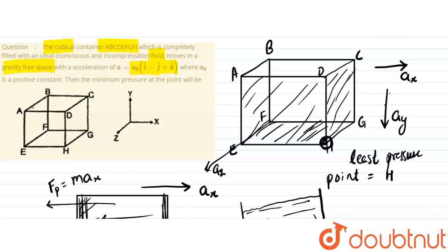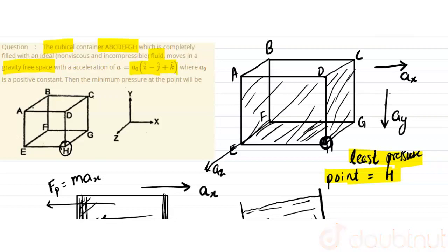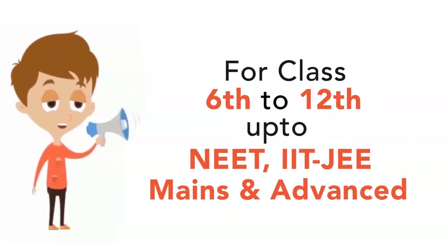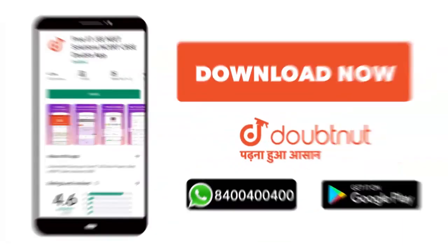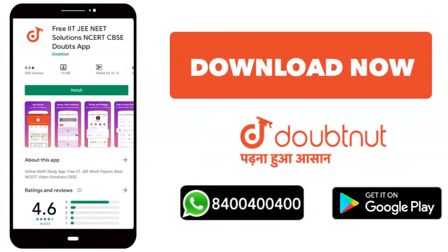The answer is: the least pressure point is point H. Point H on the cube is of least pressure. The answer is least pressure is at point H.